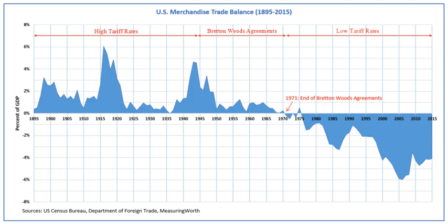The Atlantic Charter, drafted during U.S. President Franklin D. Roosevelt's August 1941 meeting with British Prime Minister Winston Churchill on a ship in the North Atlantic, was the most notable precursor to the Bretton Woods Conference. Like Woodrow Wilson before him, whose '14 Points' had outlined U.S. aims in the aftermath of the First World War, Roosevelt set forth a range of ambitious goals for the post-war world even before the U.S. had entered the Second World War.